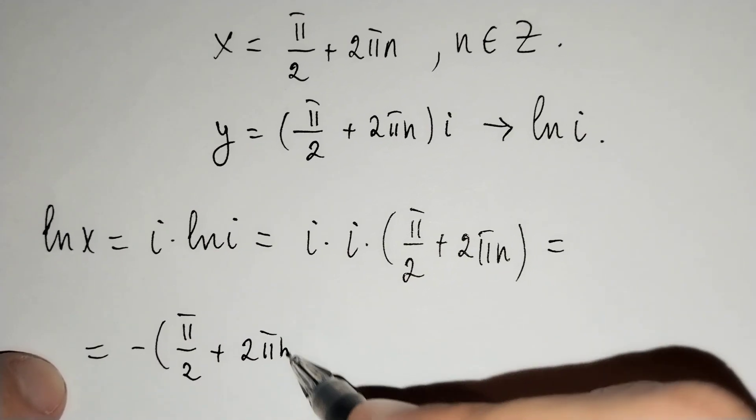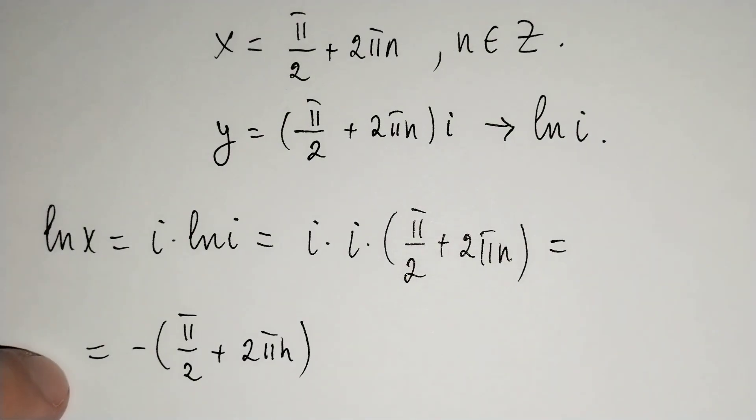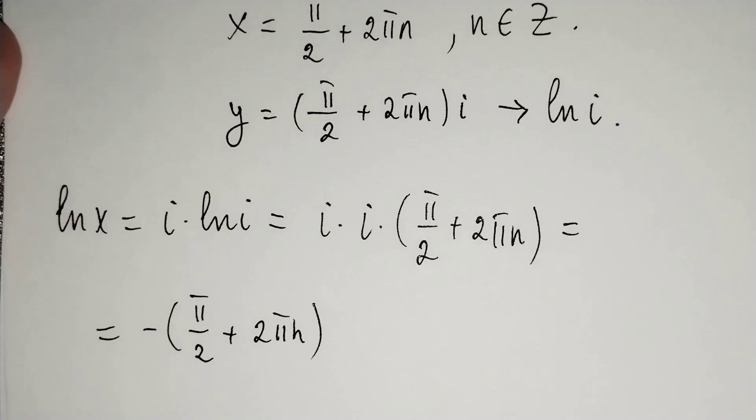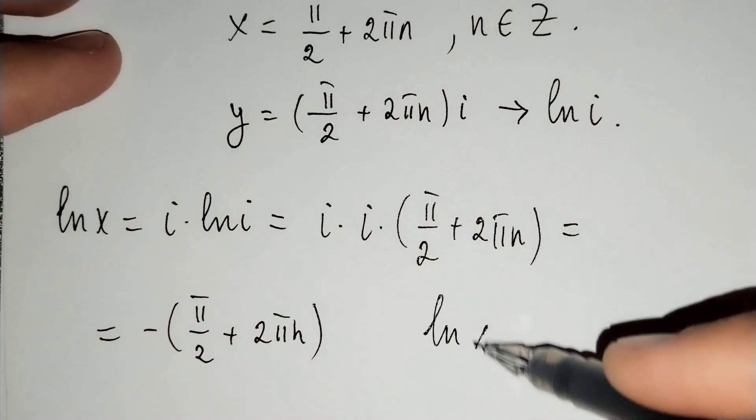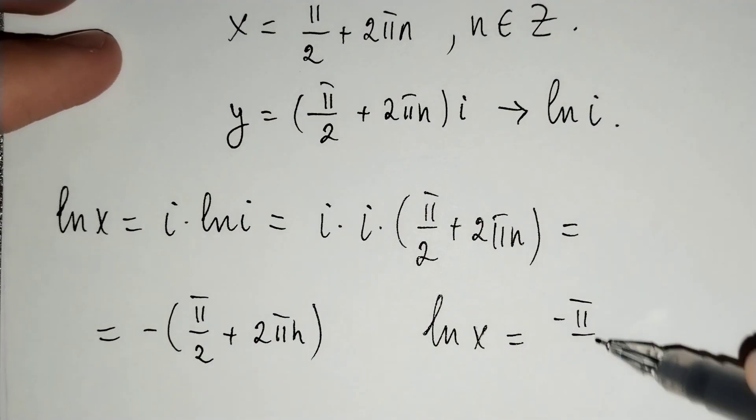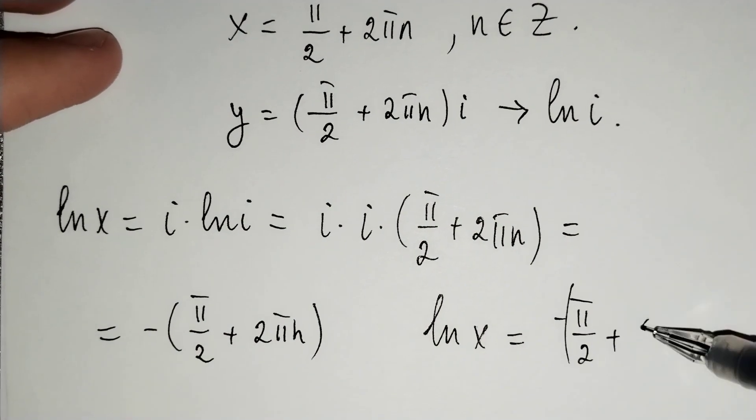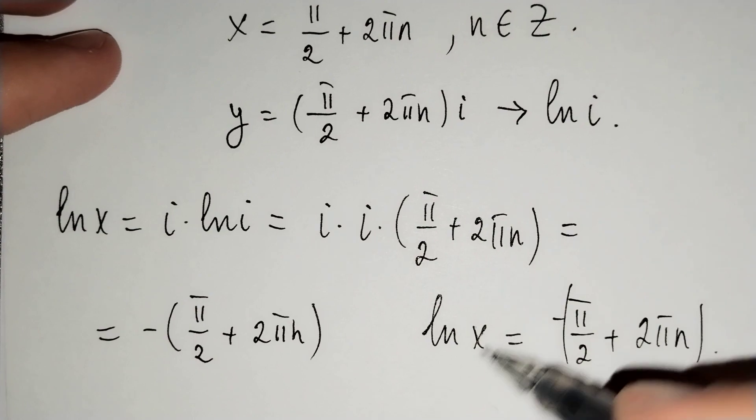Therefore, ln x equals minus pi over 2 plus 2 pi n.